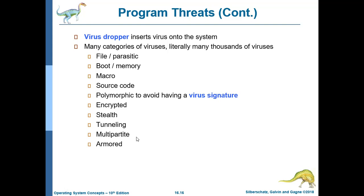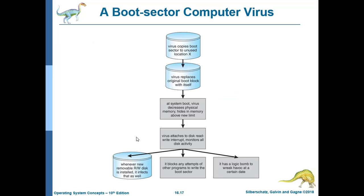An armored virus is obfuscated — written so as to be hard for antivirus researchers to unravel and understand. In the boot sector virus example, the virus copies the boot sector to an unused location and then replaces the original boot block with itself, creating a strong possibility that the operating system is rendered unusable.